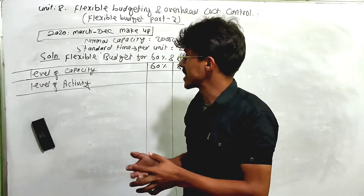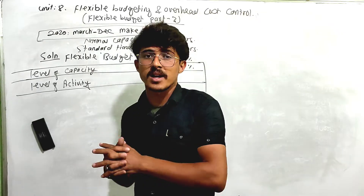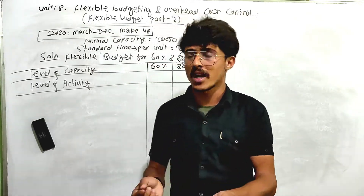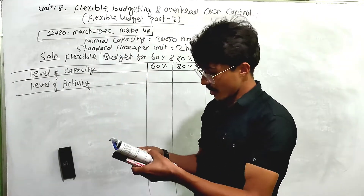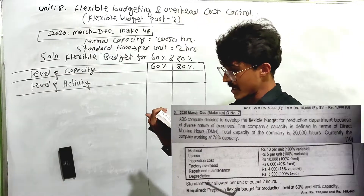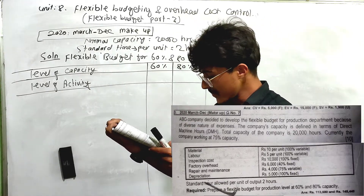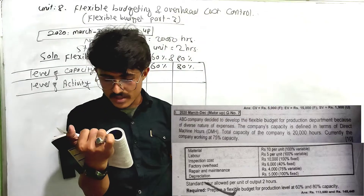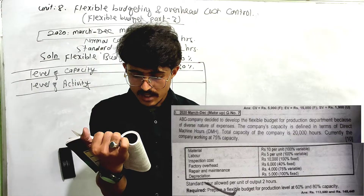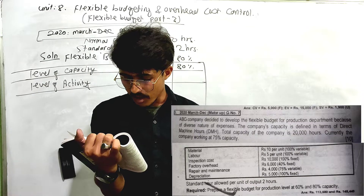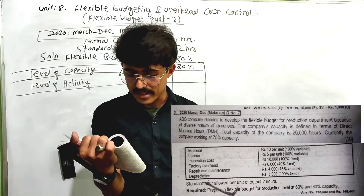In the description, I will show you the link. This is Part 3 of the problem in AS, MBS, and BBS. Now, what do you think about this question? ABC Company decided to develop a flexible budget for the production department because of the diverse nature of expenses.